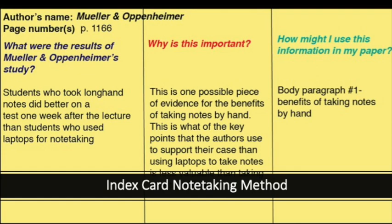The card is divided into three columns. The left column is the piece of information from the article. In the middle column, I write why this information is important. Finally, in the last column, I noted where I think I'll use this information in my paper.